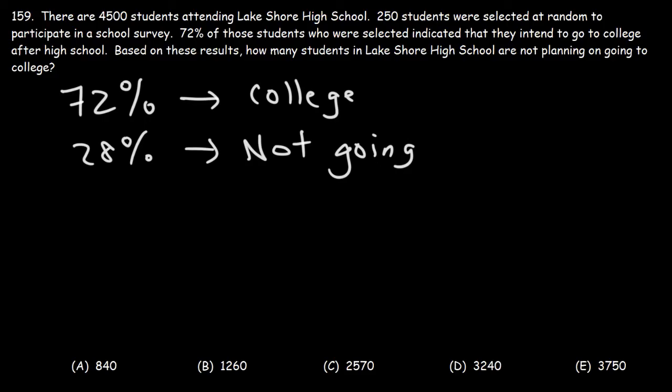In order to answer this question, in order to determine the number of students in the entire Lakeshore High School who are not going to college, we simply need to find 28% of that number. So what is 28% of 4,500?